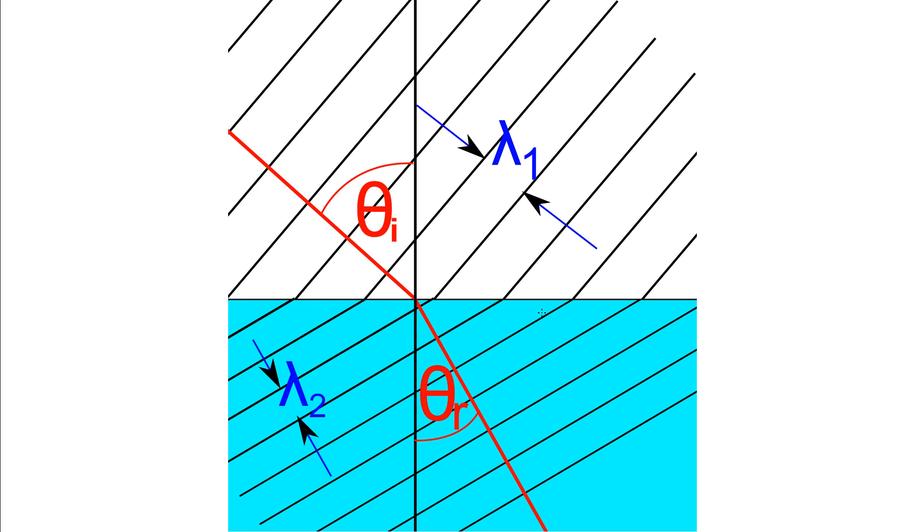We've got the interface between the air and the water, or it might be glass or something like that, and this is our normal at 90 degrees. The ray comes in and then bends towards the normal, so it gets closer to the normal. A ray going the other way of course goes the other way. If we go from a more dense medium to a less dense medium, then we bend away from it.